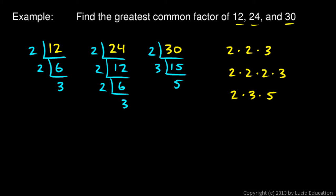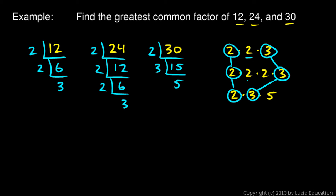Now we need to match up numbers that are common to all three lists. 2 shows up in all three lists, and 3 shows up in all three lists. This second 2 shows up in the first and second lists, but there are no more 2's in the third list, so we're done. The common factors are 2 and 3, and 2 times 3 equals 6. 6 is the answer — it is a factor of all three numbers and the greatest common factor of 12, 24, and 30.